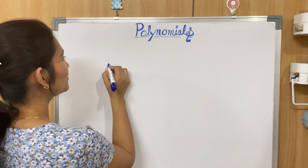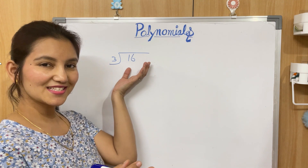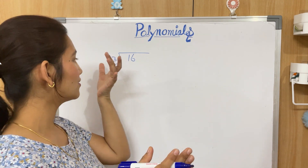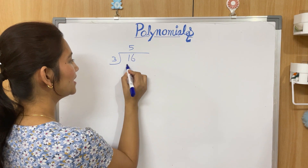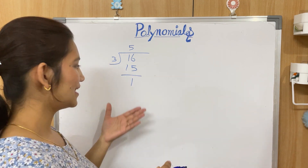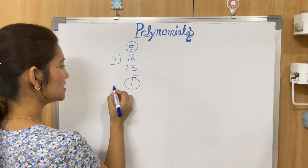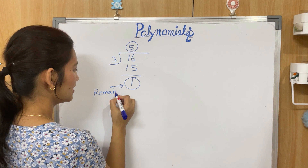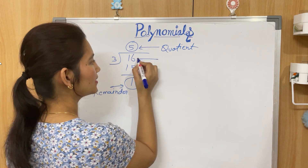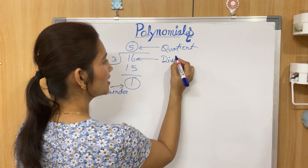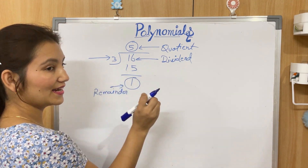Let's say you have to divide 16 by 3. Here, 16 is the dividend and 3 is the divisor. 3 times 5 is 15, and 16 minus 15 leaves 1, so 1 is the remainder. This number is the remainder, this is the quotient, this is the dividend, and the number by which we are dividing is the divisor.